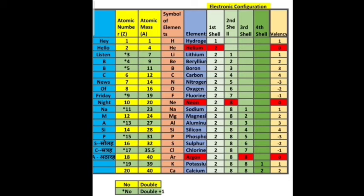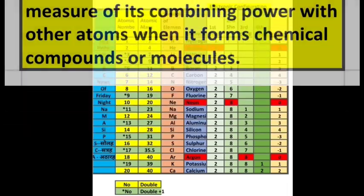The elements marked in red are noble gases — their outermost shells are completely filled, so they never react with any other element. Now we will move to the last column: valency.